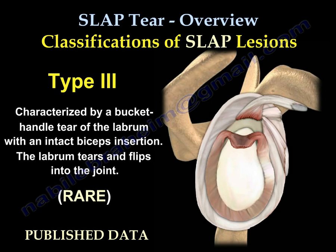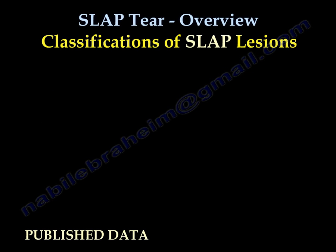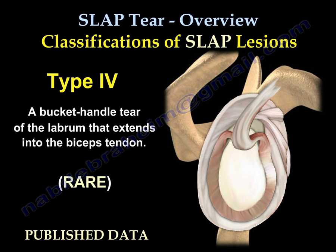Type 3 is characterized by a bucket handle tear of the labrum with an intact biceps insertion. The labrum tears and flips into the joint. Type 4 is a bucket handle tear of the labrum that extends into the biceps tendon.